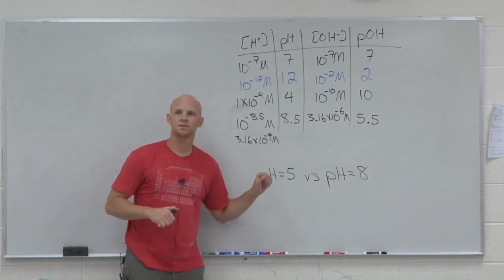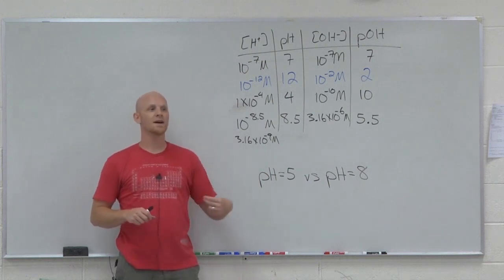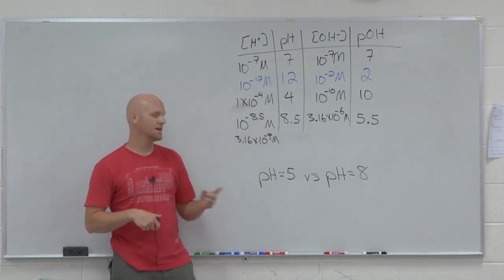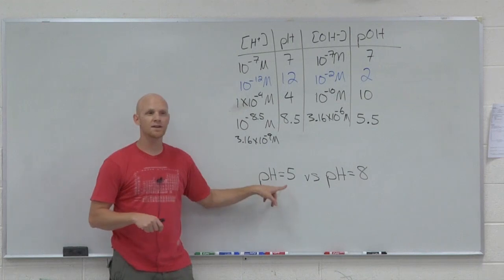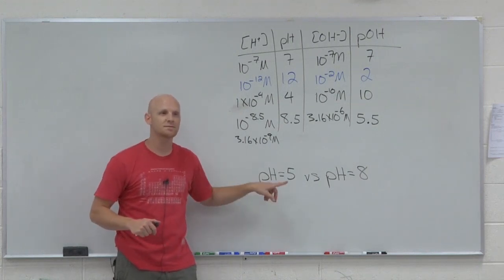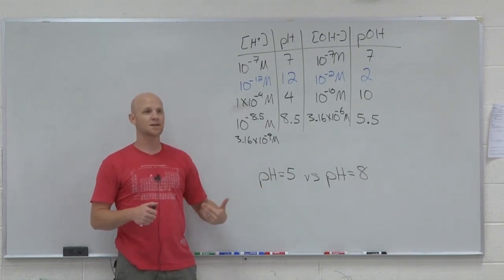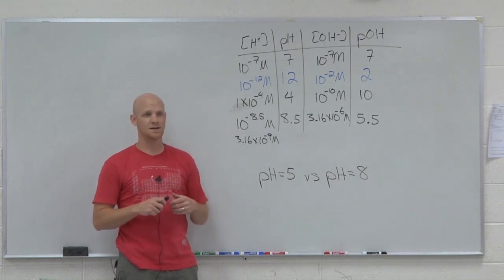The pH scale is a log-based scale. Every pH unit is a power of 10. If you're 3 pH units more acidic, that's 3 powers of 10. 10 times 10 times 10, or 10 to the 3rd times more acidic, a thousand times more acidic in this case.